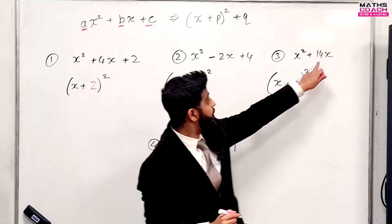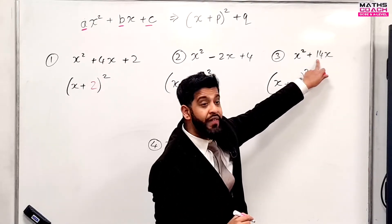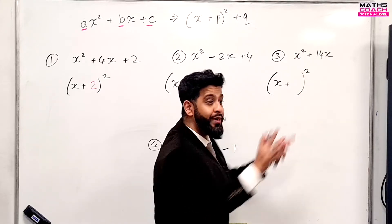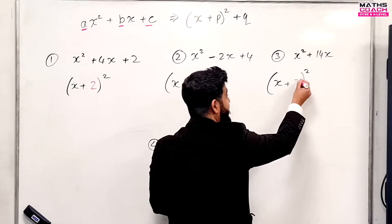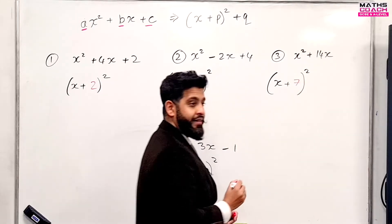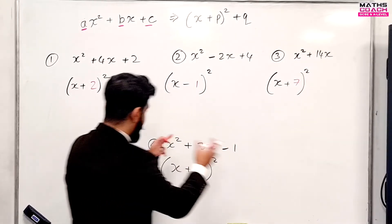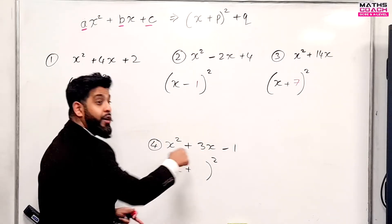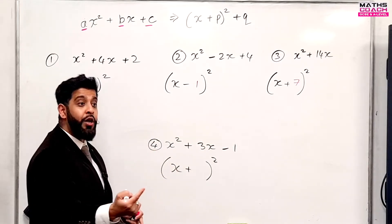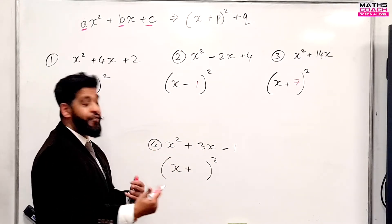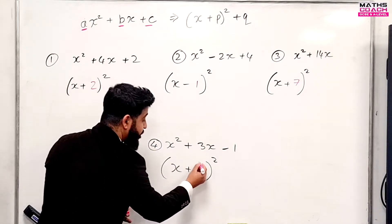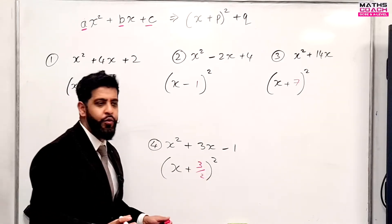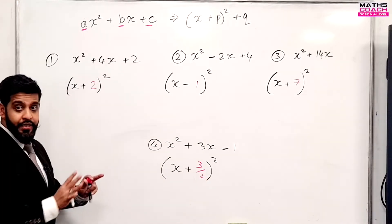For the third expression: the B value is fourteen, divide by two gives seven, so put a seven there. For the fourth expression: the B value is three, divide by two gives 1.5, but keep it as a fraction — three over two. You can write 1.5 if you want to.